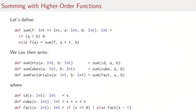Once we have that, we can then write our function sum ints, sum cubes, sum factorial as follows. Sum ints would be simply sum of id of a, b, where the id function simply returns its parameter unchanged. Sum cubes would be sum of cube and a, b, where the cube function is as we've seen before.